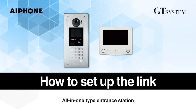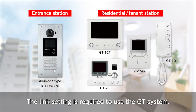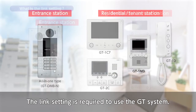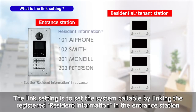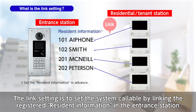GT system: how to set up the link on the all-in-one type entrance station. The link setting is required to use the GT system. The link setting is to set the system callable by linking the call button of the entrance station with each residential tenant station.